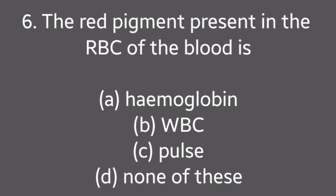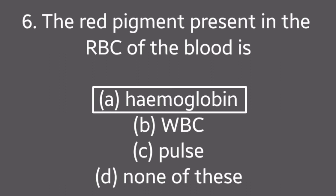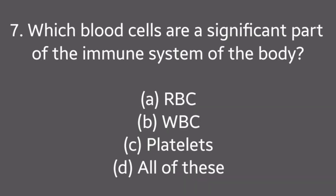Question No. 6: The red pigment present in the RBC of the blood is — Hemoglobin, WBC, Pulse, None of these. Answer is Option A: Hemoglobin.